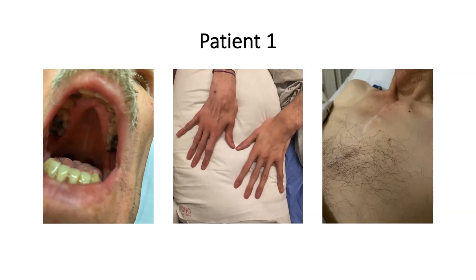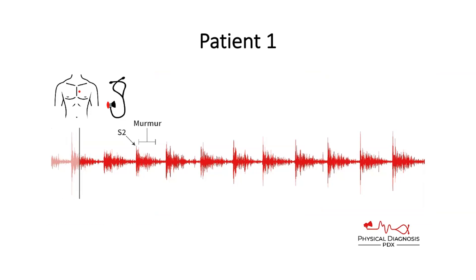I never want to be surprised by anything I see from something I order. If I order an EKG, I already want to know what I should be anticipating. When I look at the patient's neck, I want to know what I'm looking for. It's all about anticipation. If you have Marfan syndrome in mind and you're thinking about aortic regurgitation, you should listen to the chest — and you're going to hear a decrescendo diastolic murmur. And that's exactly what we hear in this case.